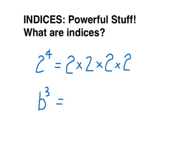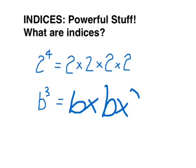2 to the power of 4 is index notation, while 2 times 2 times 2 times 2 is its expanded form. So B cubed equals B times B times B.